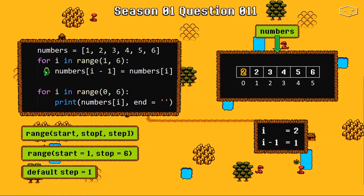i became 2, i minus 1 became 1. Python goes to the index 2 of our list, copies the value and pastes into the previous position.